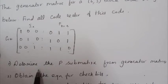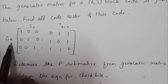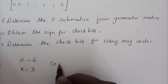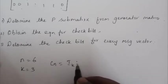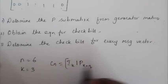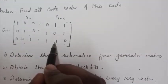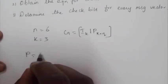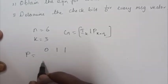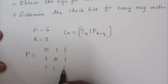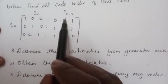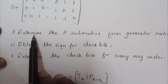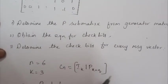The first sub-question is: determine the P submatrix from the generator matrix. The generator matrix G is the combination of the identity matrix and the P matrix. From the identity matrix portion we can easily extract our P matrix, which is the submatrix given as: P = [[0,1,1],[1,0,1],[1,1,0]].